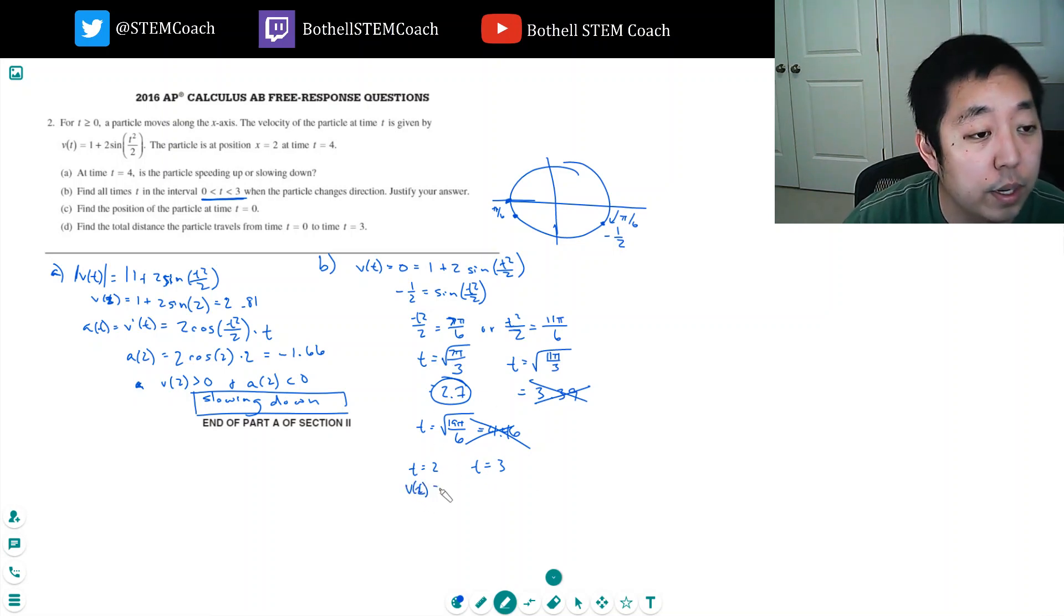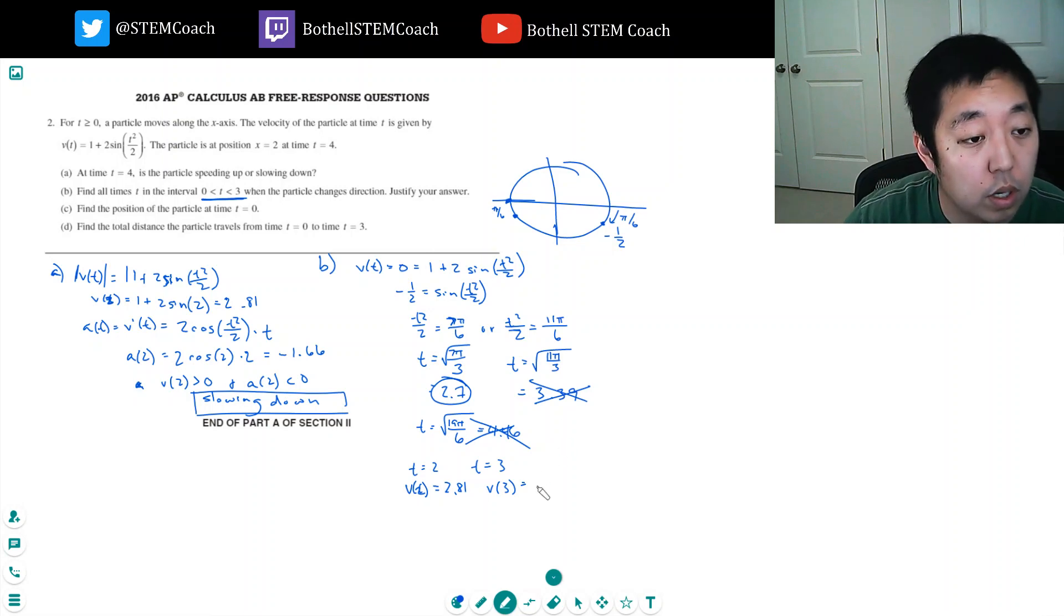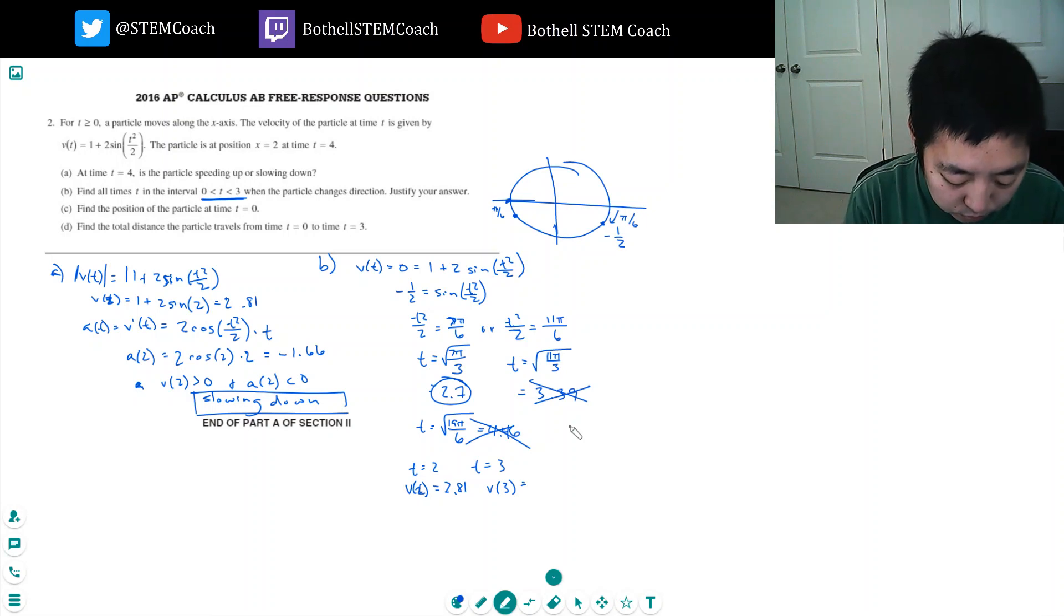So v(2) we already computed was 2.81. V(3) would equal 1 plus 2 sine 9 divided by 2, which equals negative 9.55.